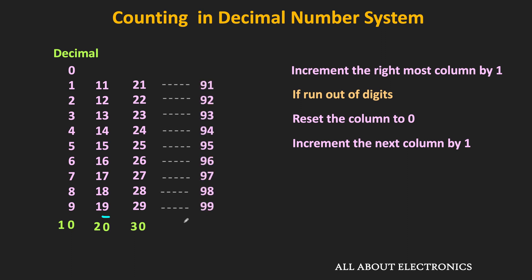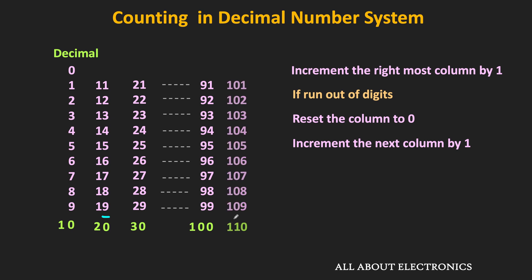At 99, the rightmost column is already run out of digits, so we reset it to 0. Moving to the next column, it is also run out of digits, so we reset it to 0 as well, and then increment the next column by 1. That means after 99, the next number is 100. We can follow the same procedure to count further. That is how counting in decimal is carried out.